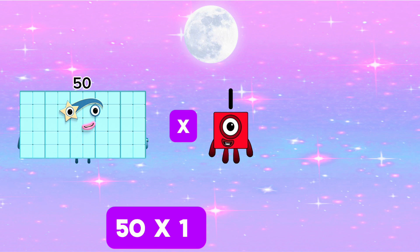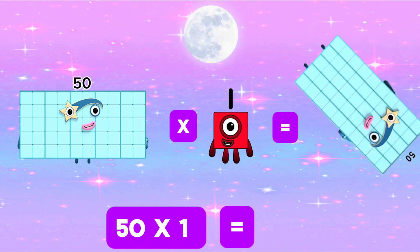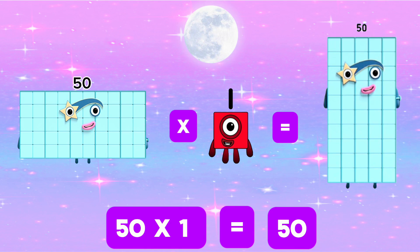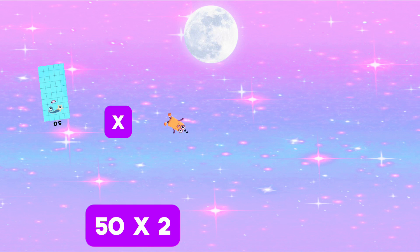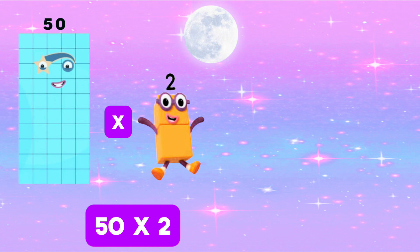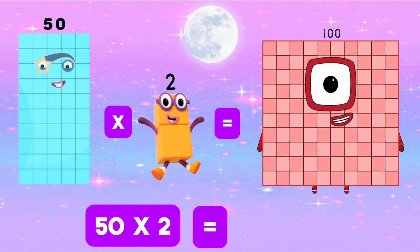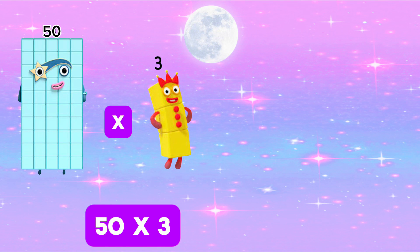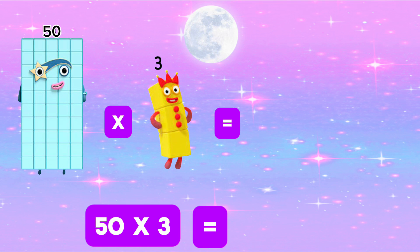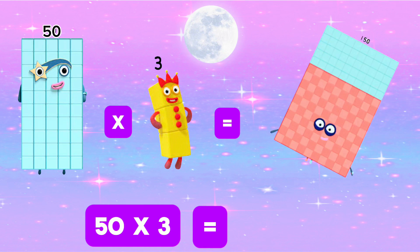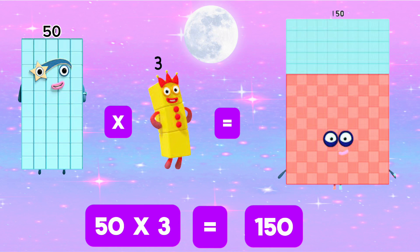50 times 1 is equals 50. 50 times 2 is equals 100. 50 times 3 is equals 150.